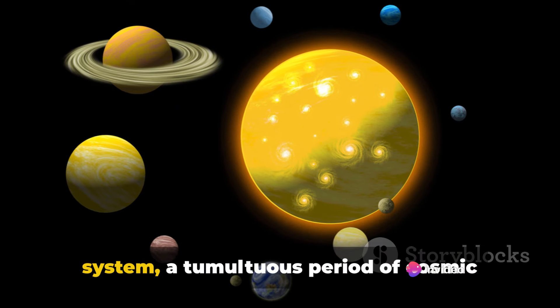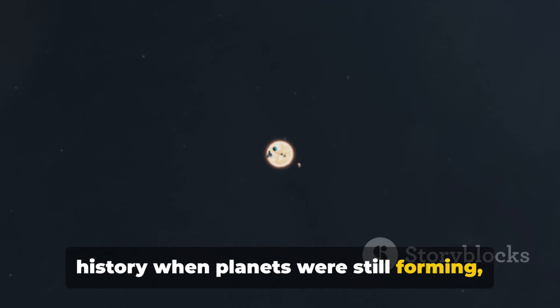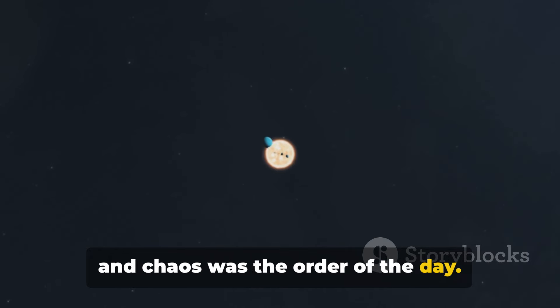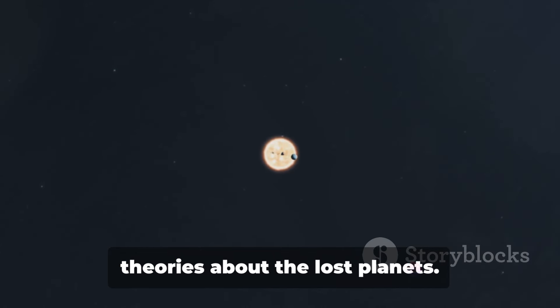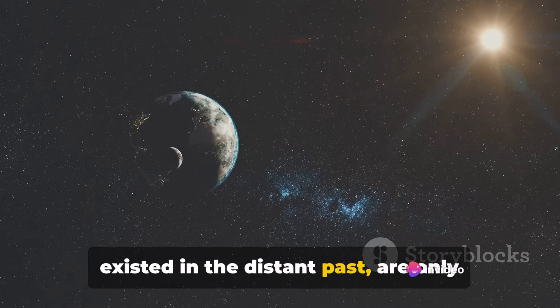We've revisited the birth of our solar system, a tumultuous period of cosmic history when planets were still forming and chaos was the order of the day. We've also delved into the intriguing theories about the lost planets. These celestial bodies, which might have existed in the distant past...